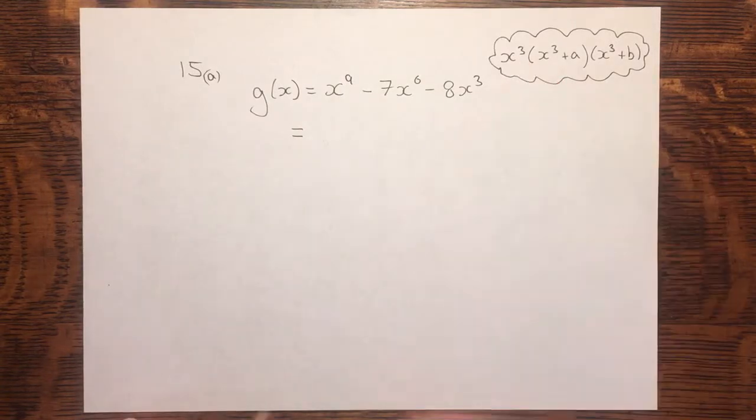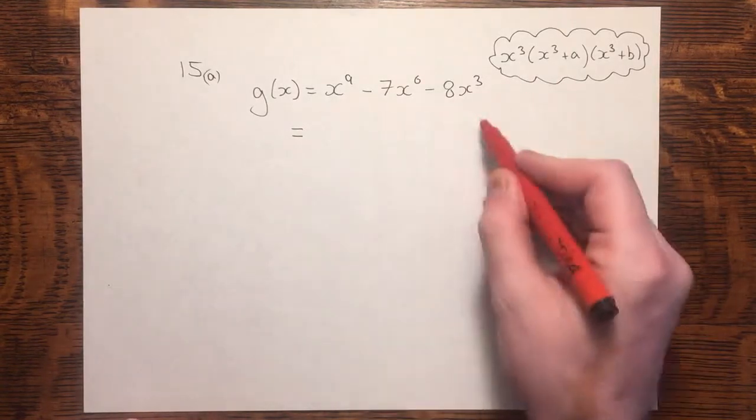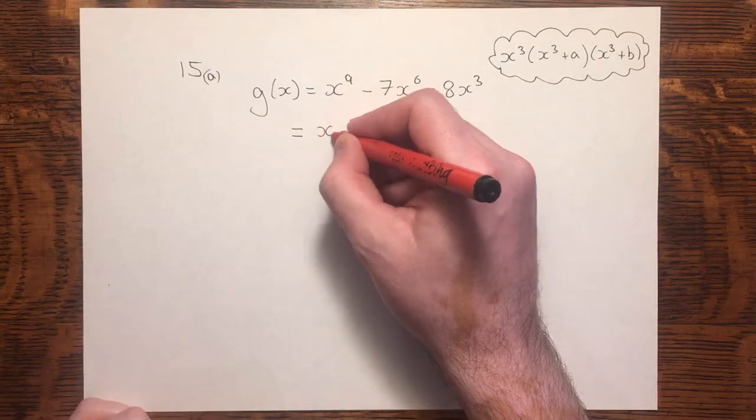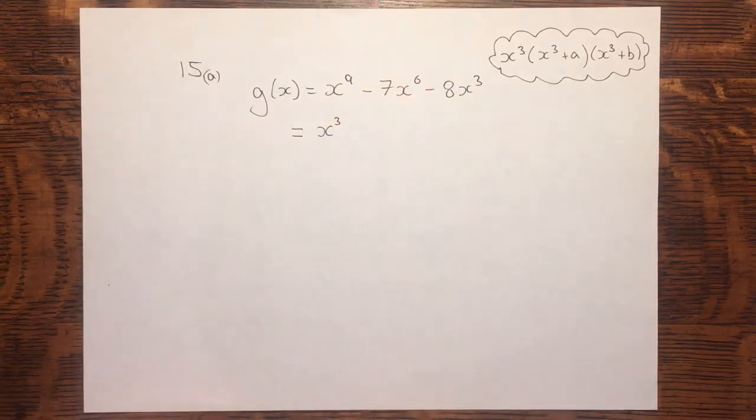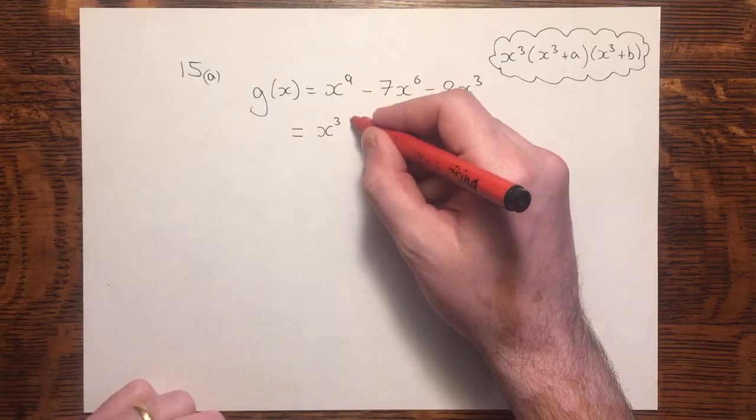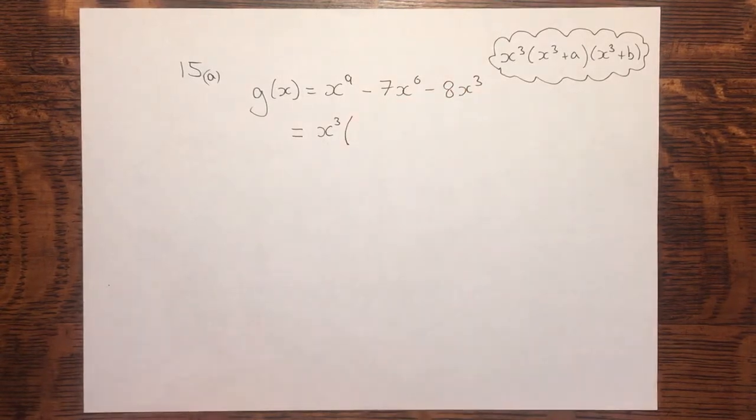Since we're going to have an x cubed out front, let's extract that as a common factor. I often mention common factors as the starting point in many factorisations, or at least something you should check for, because if it's available it would help.